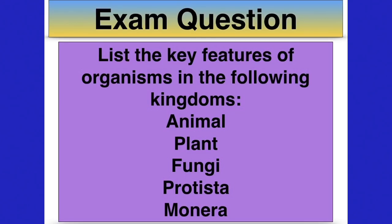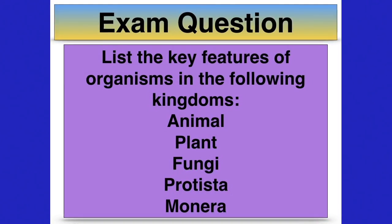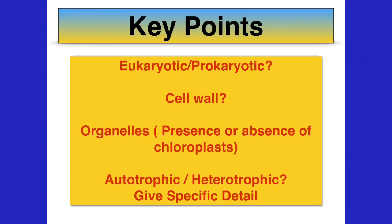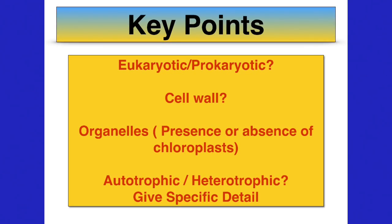List the key features of the organisms in the following kingdoms: animal, plant, fungi, protista, and monera kingdoms. That question will help you revise the kingdoms. So write down the key points for each of the kingdoms.